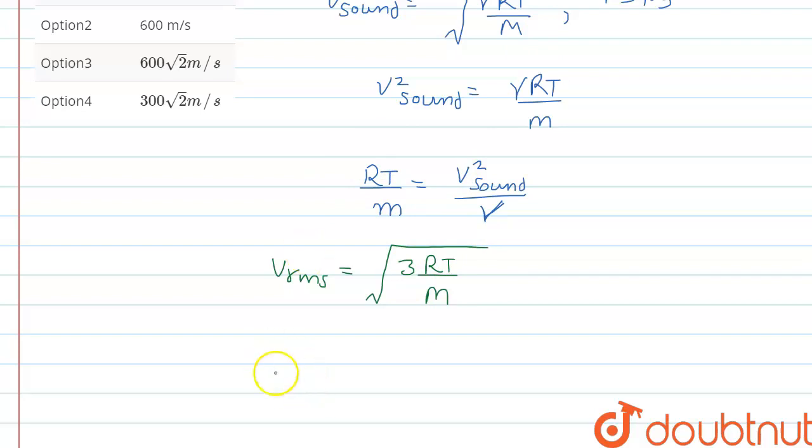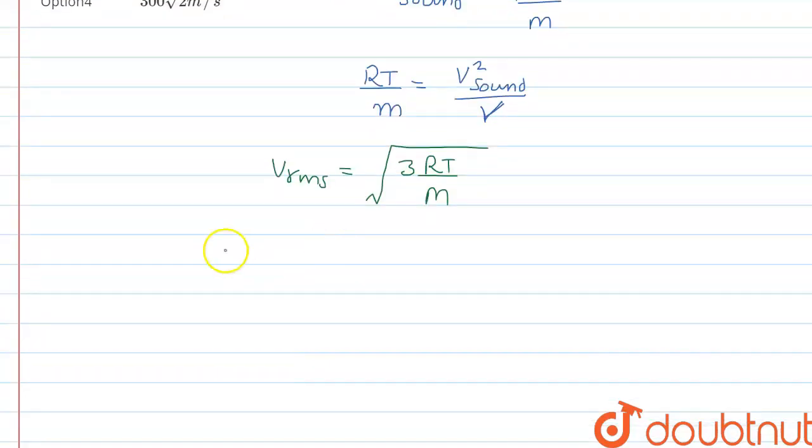So v_rms will be under root of 3 and RT upon m is v²_sound upon gamma. Now v_sound will be outside of root, so it will be like v_sound into root 3 upon gamma.